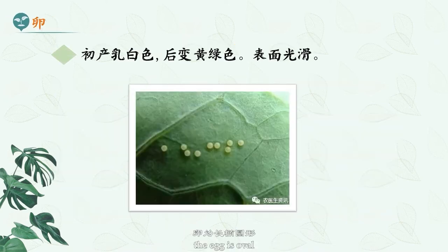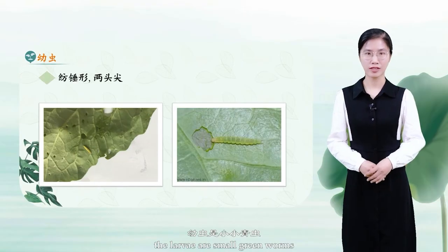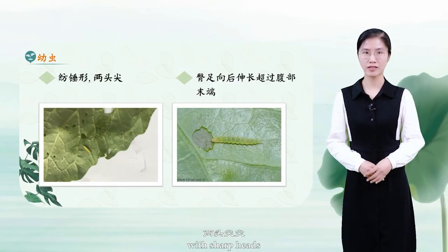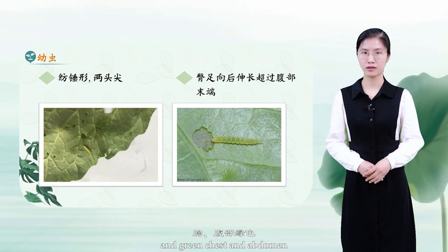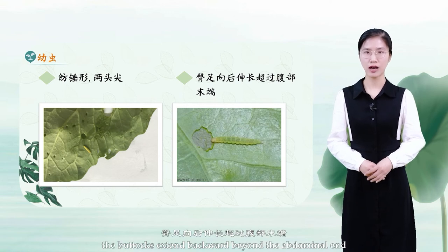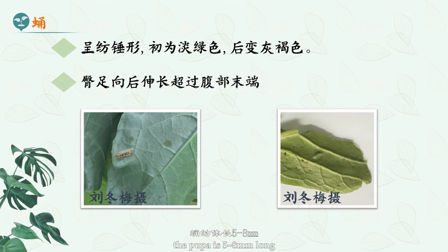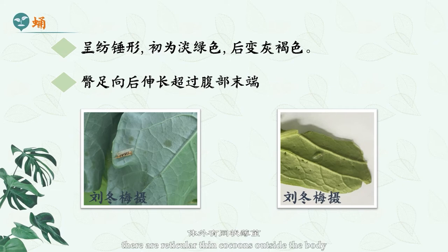The egg is oval, milky white at first, then turns yellow and green, with a smooth surface. The larvae are small green worms with sharp heads; mature larvae are ten millimeters long, spindle-shaped with a yellow-brown head and green chest and abdomen, and the buttocks extend backward beyond the abdominal end. The pupa is five to eight millimeters long, spindle-shaped, pale green at first then grayish brown, with thin cocoons outside the body through which the pupa can be seen.